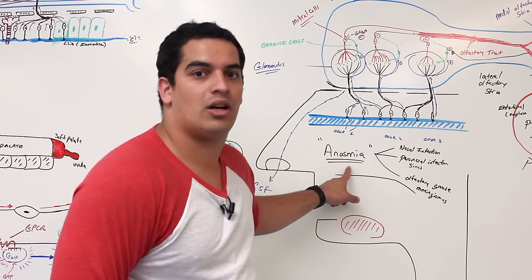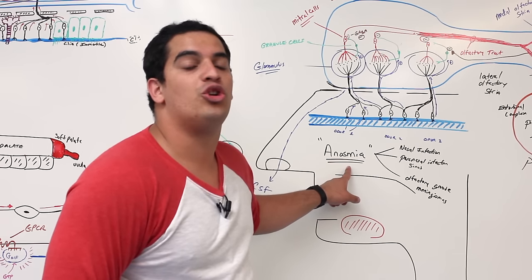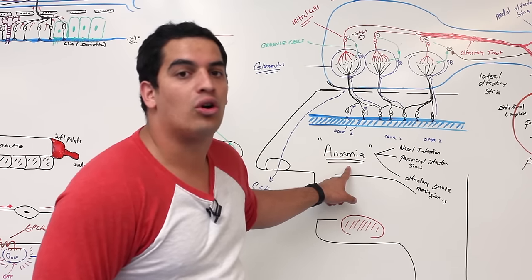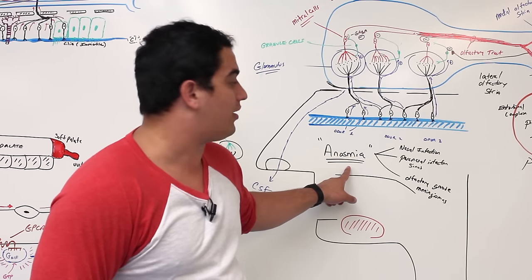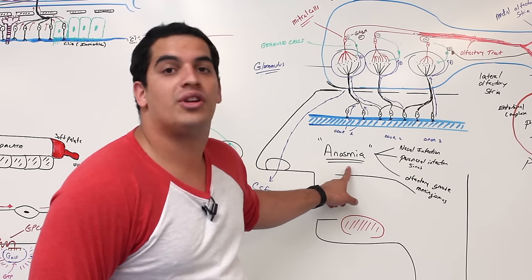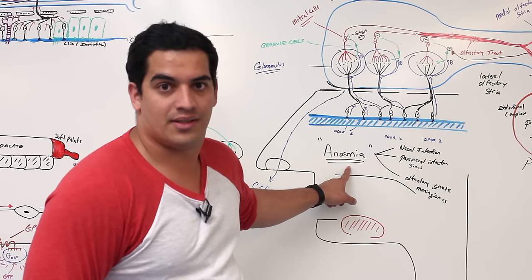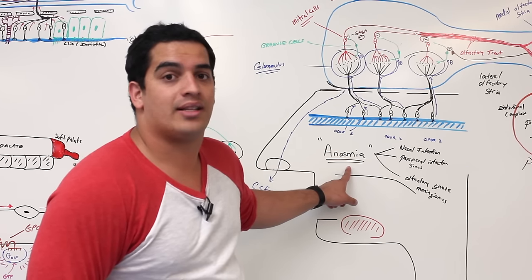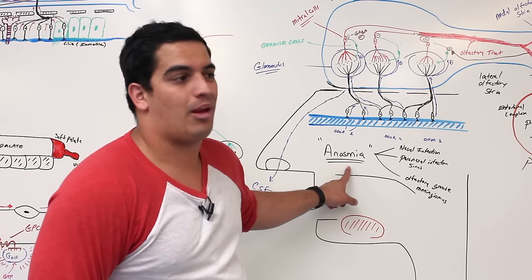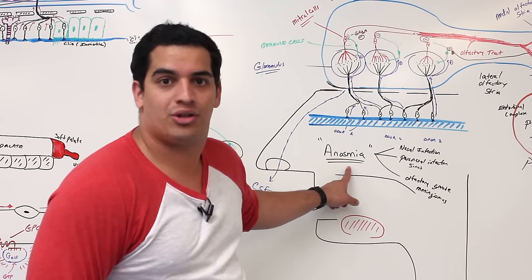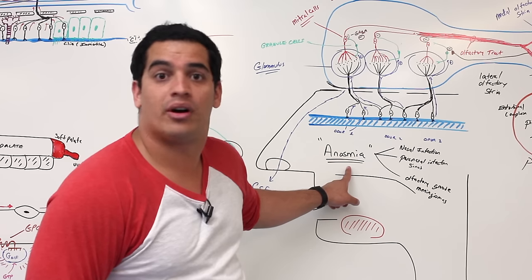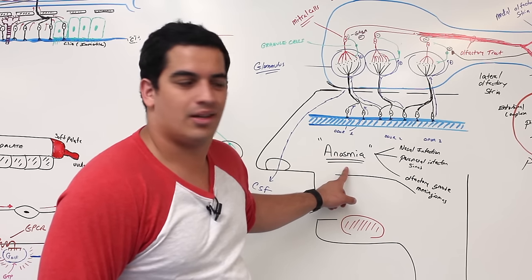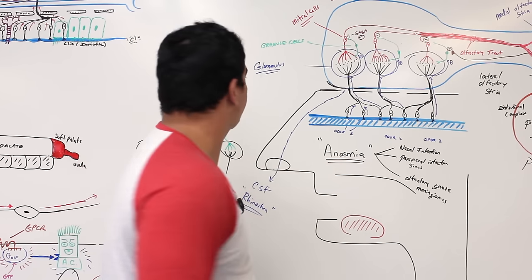One other important thing: anosmia is often a sign of early onset of neurodegenerative diseases. It's one of the clinical signs of someone developing Lewy body dementia, Alzheimer's, or Parkinson's disease — they start losing their ability to smell.